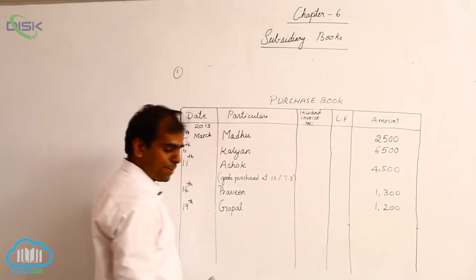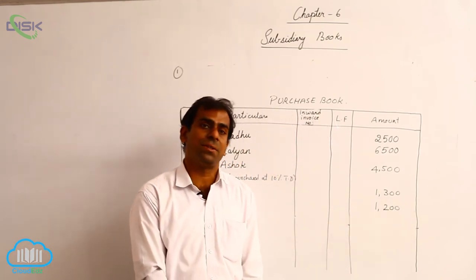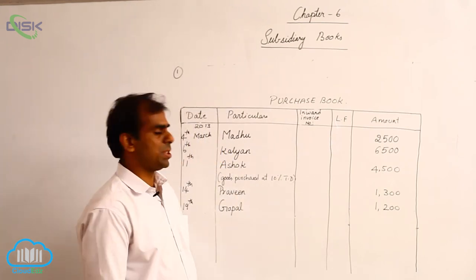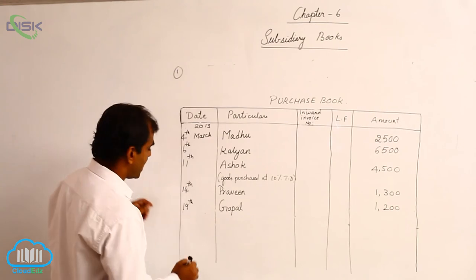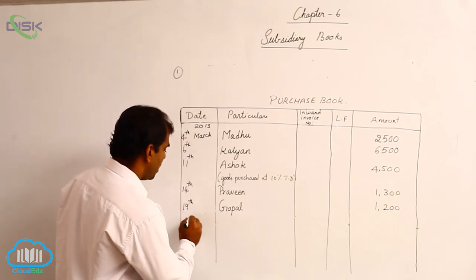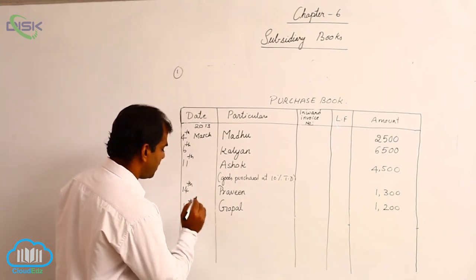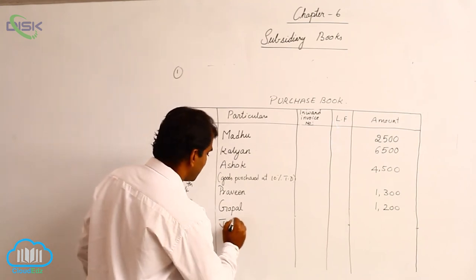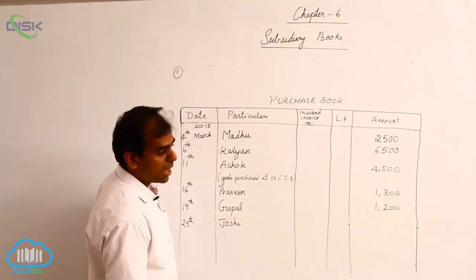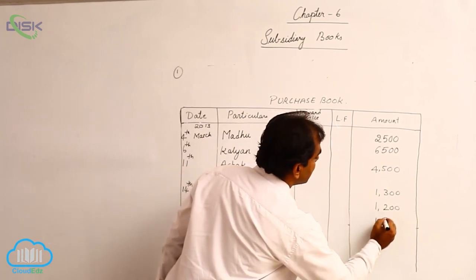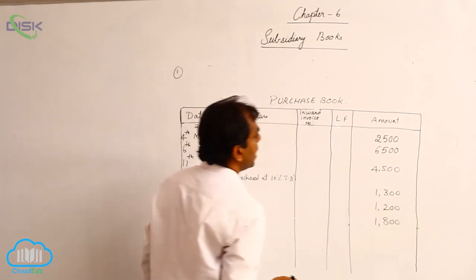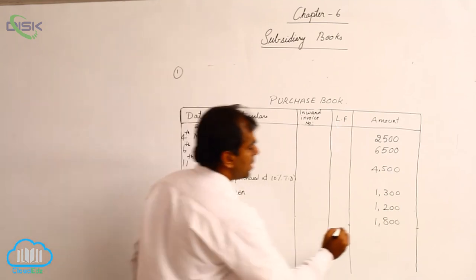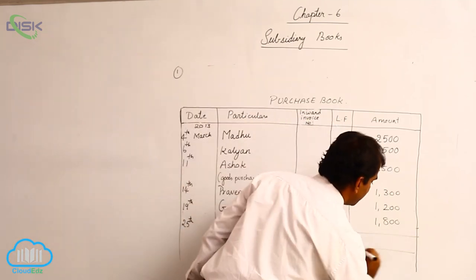The last transaction is on 25th March. Again we have purchased goods from Joshi — being a credit transaction, we will enter on 25th, mention Joshi's name in the particulars column, and the amount 1,800 in the amount column. Now all the transactions are over. You need to simply total the book.